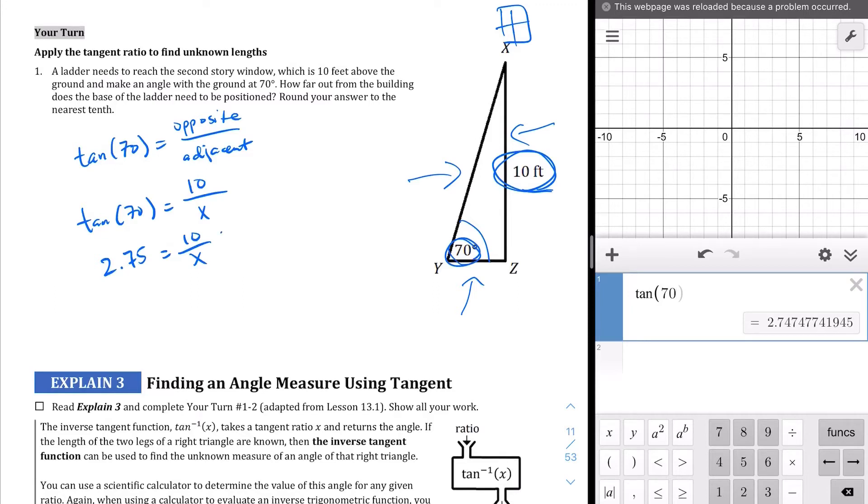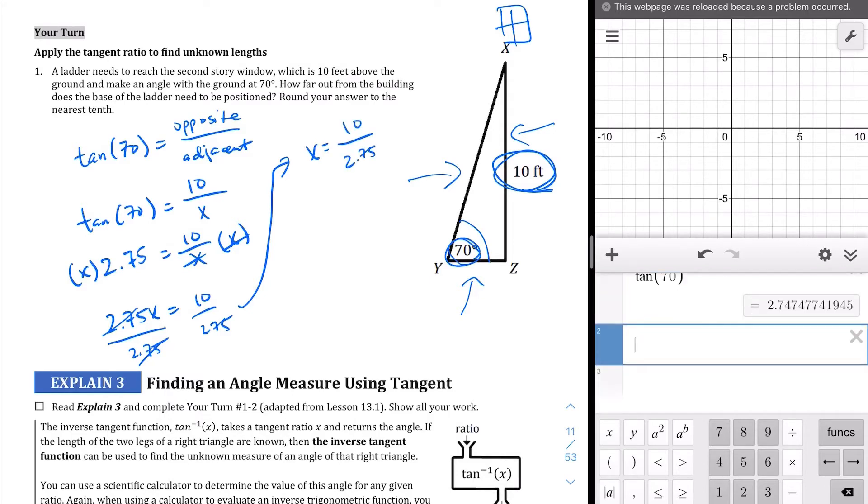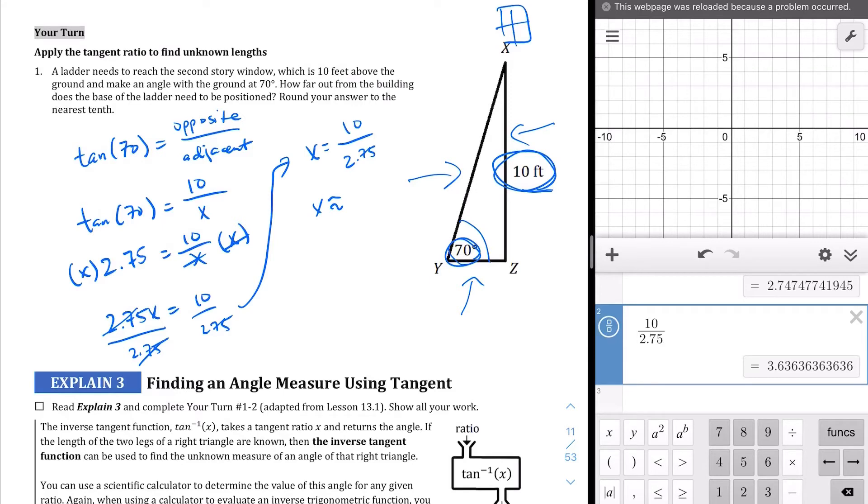So now it becomes just an algebraic problem. We need to get the x out of the denominator, so I'm going to multiply both sides by x. We get 2.75x equals 10, because this cancels out. Then we're going to divide both sides by 2.75. We should get x equals 10 over 2.75. Let's punch that into the calculator. 10 divided by 2.75, we should get 3.63. Let's round it up to 3.64. So x equals approximately 3.64. How far is the ladder positioned from the wall? Well, it's about 3.64 feet from the wall.